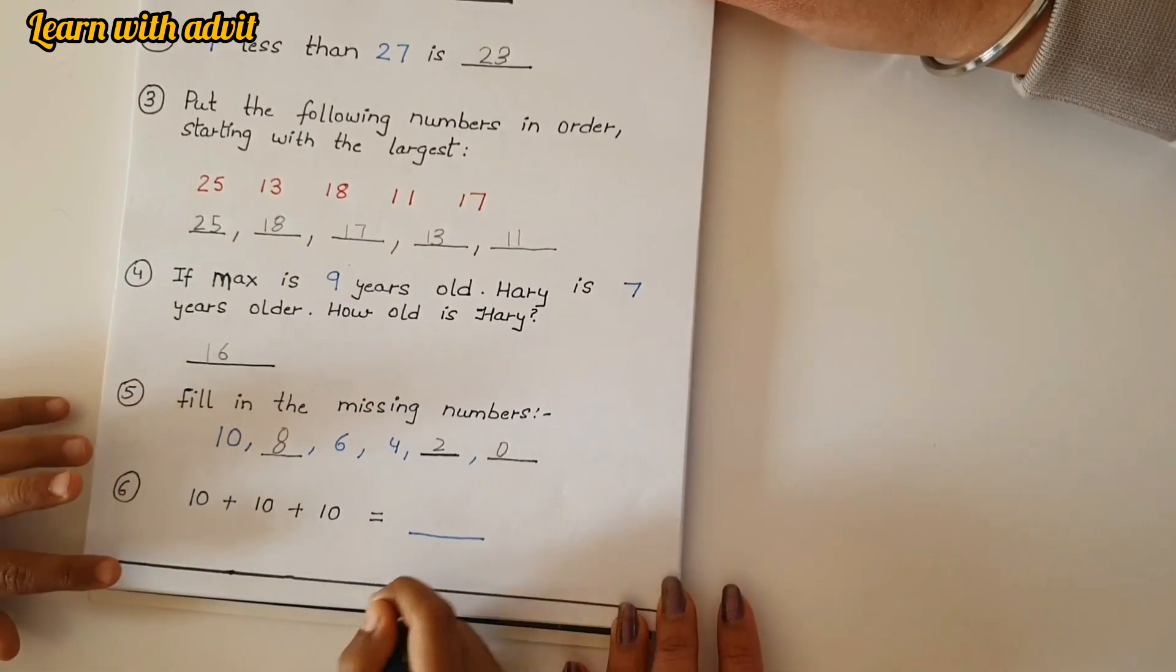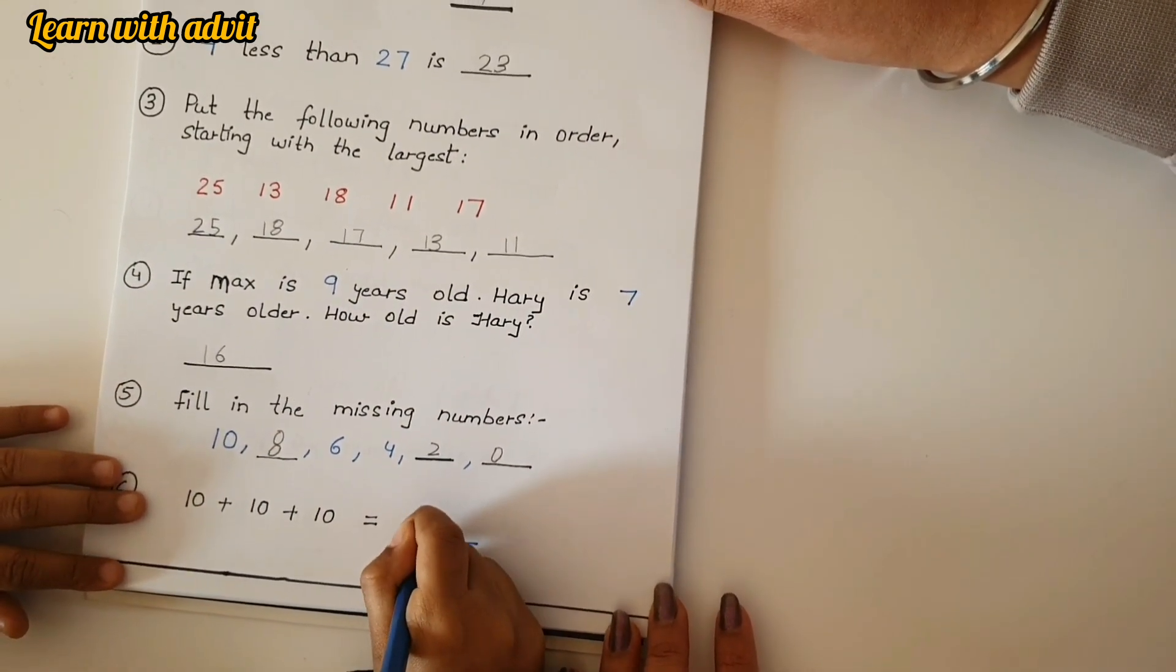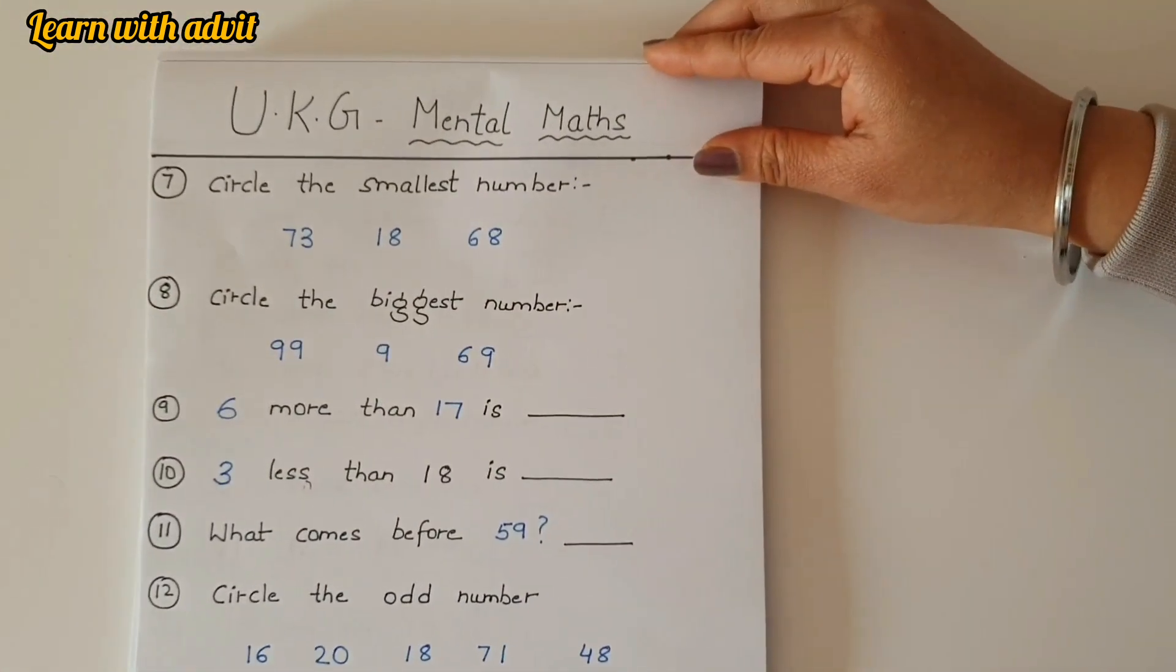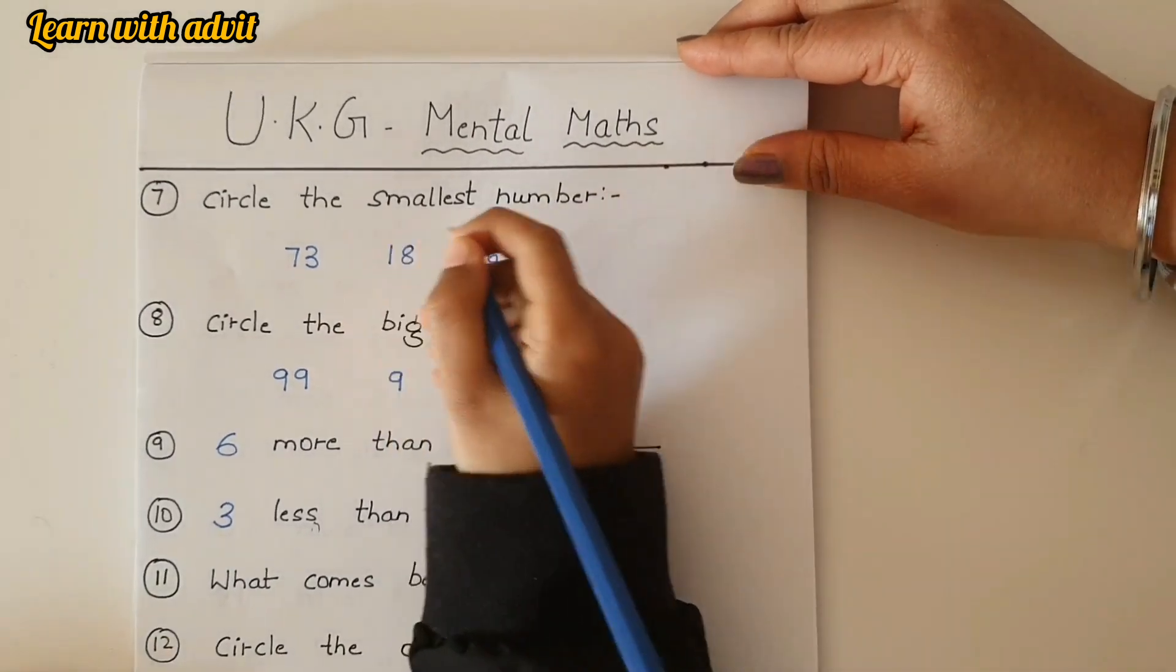Next, 10 plus 10 plus 10 is 30. Good job. Here, circle the smallest number. Come on, you have to circle the smallest one. 18 is the smallest number. Yes.